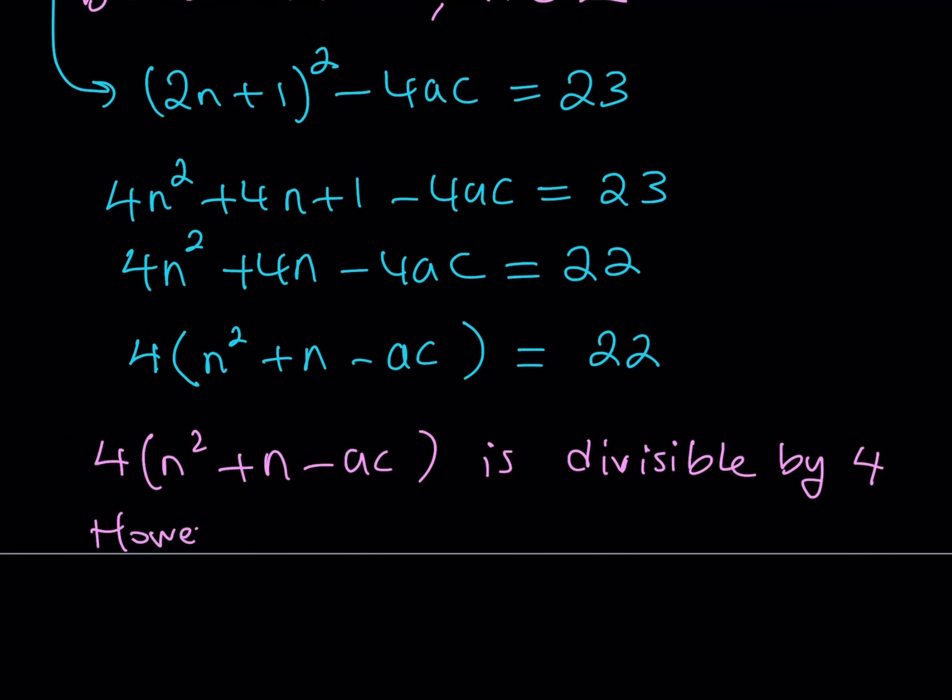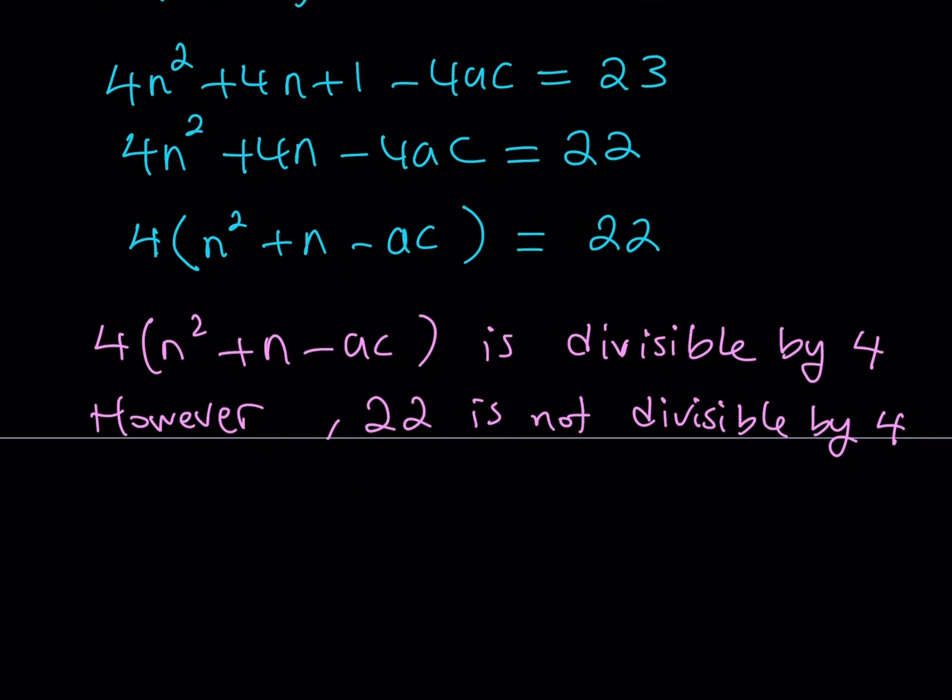However, 22 is not divisible by 4 as we well know. Because 24 is a multiple of 4, 20 is a multiple of 4, 22 is in between. It's not divisible by 4. So you get a remainder when you divide 22 by 4, obviously. What is that supposed to mean?